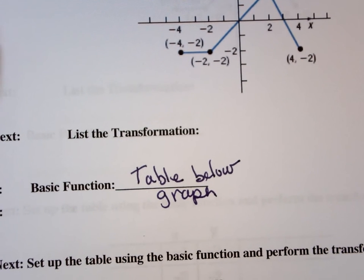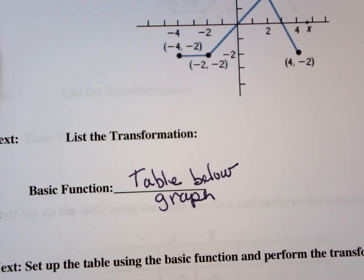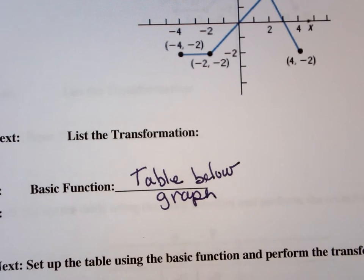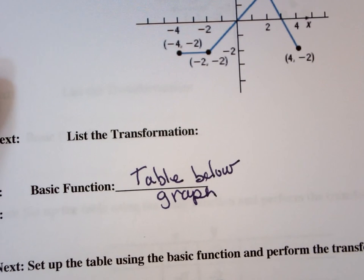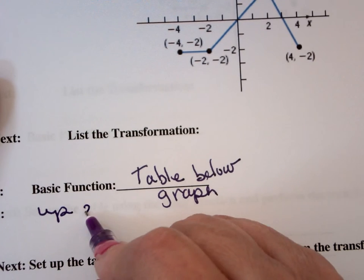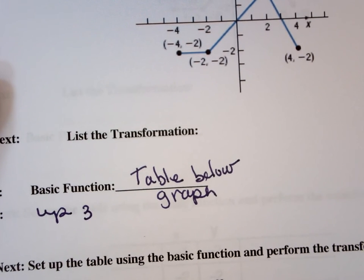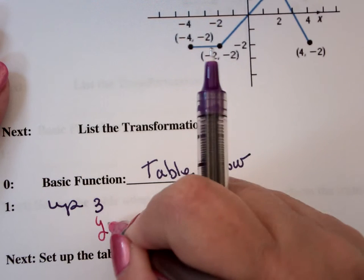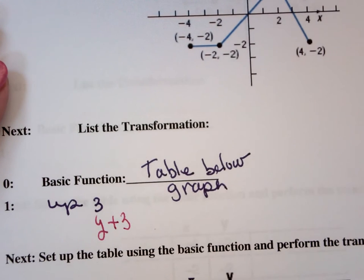On a problem like this, I'm not going to ask you what the basic function is. But that's essentially what it is. And then it says, what is the transformation? The transformation is up three, which means I'm going to take the y values and add three to all the y values.